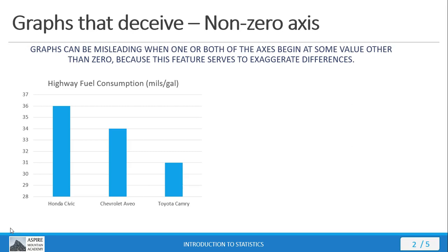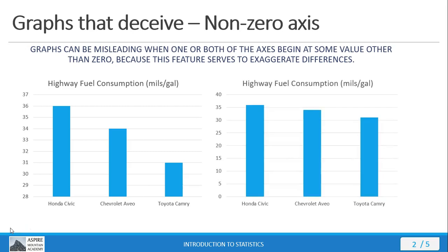Now what if we were to redo this graph with the axis starting at zero? What would it look like? Well, it would look something like this. Do you see why somebody used a non-zero axis? Presumably someone wants you to buy a Honda Civic. They used a non-zero axis because if you start at zero, notice how there doesn't seem to be all that much difference between these three models. They seem fairly close — because they are.